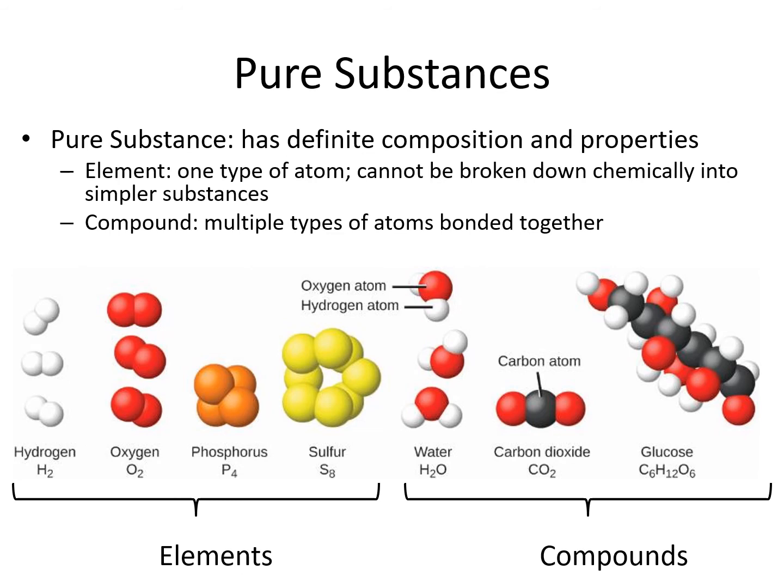Pure substances have constant properties and composition. They are made up of the same type of atoms in the same amounts every time. Because of this constant composition, they also have constant properties, such as density or how they react with certain substances.